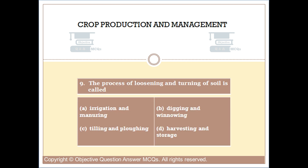Question number nine: the process of loosening and turning of soil is called. Option A: irrigation and manuring. Option B: digging and winnowing. Option C: tilling and plowing. Option D: harvesting and storage.